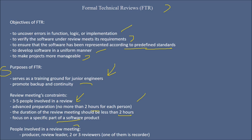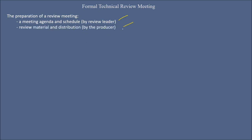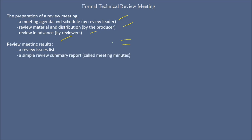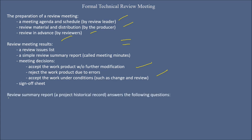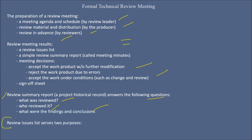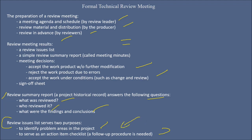People involved in a review meeting include a recorder, a producer, a review reader, and two or three reviewers. The recorder records everything. A meeting agenda and schedule is fixed by the review reader; review material and distribution is done by the producer; and reviewers review in advance. Review meeting results include a review issue list identifying the issues, a simple review summary report (meeting minutes), and meeting decisions: to accept the work product, advise modification, or reject it due to errors. The work can also be accepted under certain conditions such as change and re-review, followed by a sign-off sheet. The review summary report answers: what was reviewed, who reviewed it, and what were the findings and conclusions.